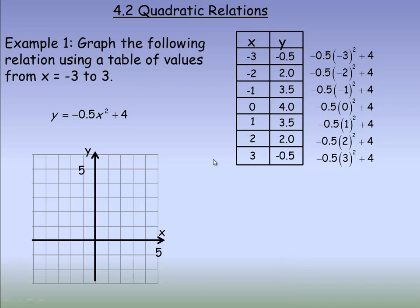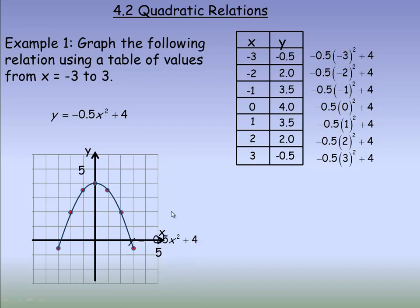Now we plot these ordered pairs. Negative 3, negative 0.5 goes right there; negative 2, 2 goes here. We graph the rest of the points — 0, 4 is the vertex right there; then 1, 3.5; 2, 2; and 3, negative 0.5. We draw a smooth curve between them. The graph does continue down on both sides — that's not the entire graph, it keeps going down. It's a good idea to write your equation beside your graph on the grid. That's how you graph a quadratic relation using a table of values.